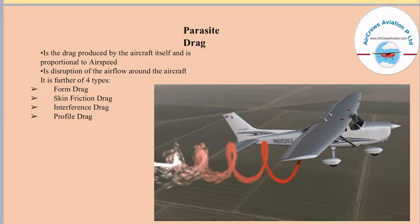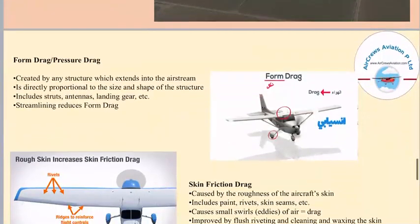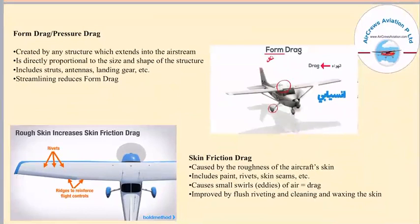Parasite drag is of four types: form drag, skin friction drag, interference drag, and profile drag. Form drag, also known as pressure drag, is created by any structure which extends into the airstream and is directly proportional to the size and shape of the structure. It typically includes struts, antennas, landing gear, etc. This type of drag is usually caused by the giant shape and structure of an aircraft.